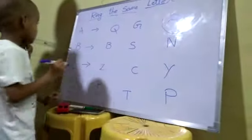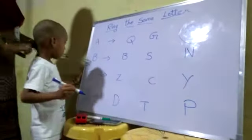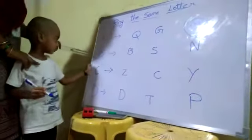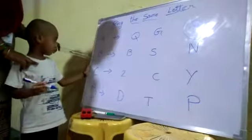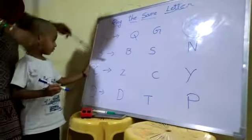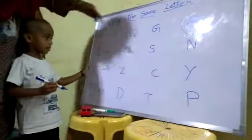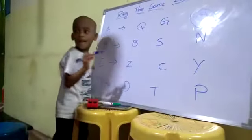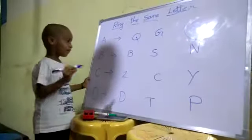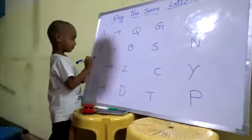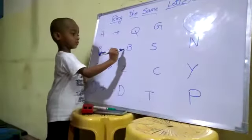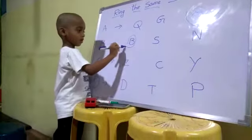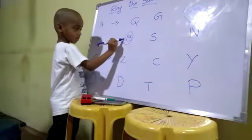What is this letter? B. What is this letter? B. Very good. Where is the B? This line. Ring the B. Very good.